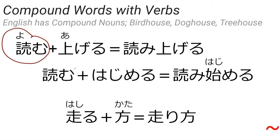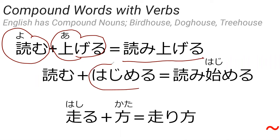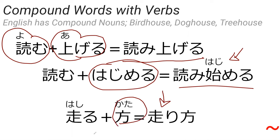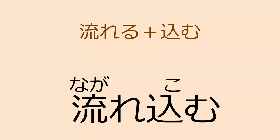The way you make compound verbs is that you get stem form — adding basically i to the dictionary form — and just stick it on to the other verb. Do you know what yomu means? Yomu is to read. Ageru is to raise — you can use it to raise your voice — so yomiageru means to read out loud. Hajimeru is to start, so yomihajimeru is to start reading. Hajimeru is taught like a grammar point but it's actually just a compound verb. You'll also see these with nouns like kata — hashiru plus kata is hashirikata, the way of running.